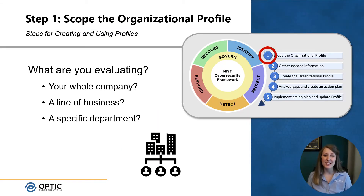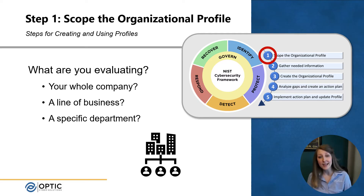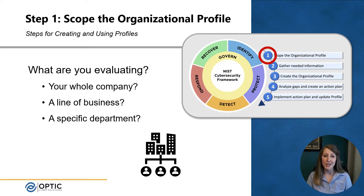So let's walk through the steps. The first step is to scope the organizational profile. This basically means figure out what we're looking at. Are you looking to capture information on your whole company, a line of business, a specific department? Making sure you've got a defined scope up front will likely keep you from chasing squirrels down the road.